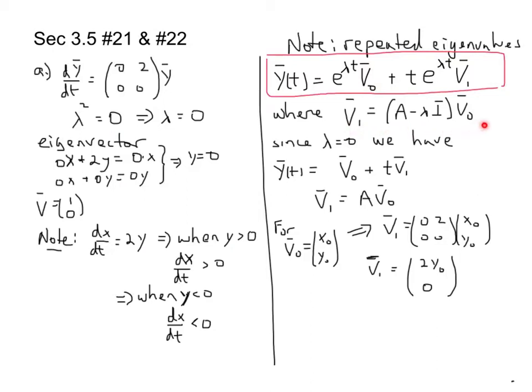y1 is given by this little formula as derived in class and shown in the book. But since lambda is equal to zero, this equation reduces quite a bit to simply being v naught plus tv1.